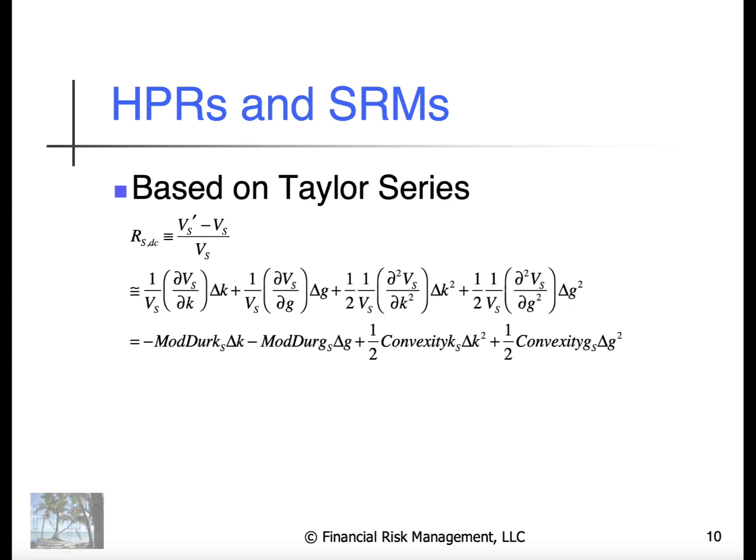Exploring holding period returns and static risk measures. The return on a stock discretely compounded is basically the value of the stock at the end of the period adjusted for dividends and other cash flows minus the stock at the beginning of the period. The numerator is the profit, the denominator is the stock at the beginning of the period.